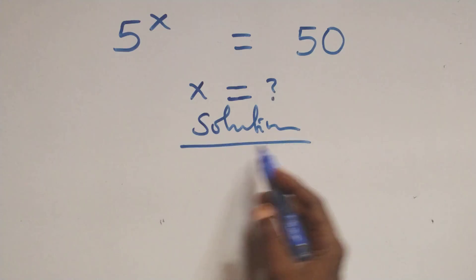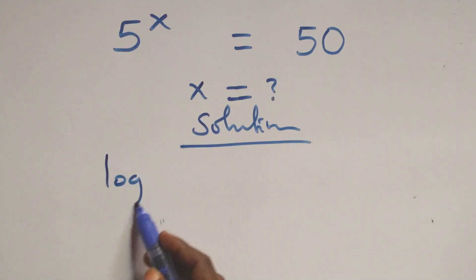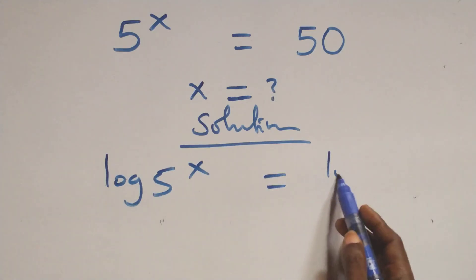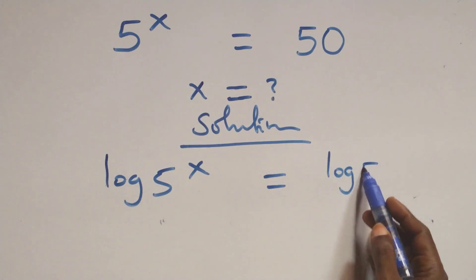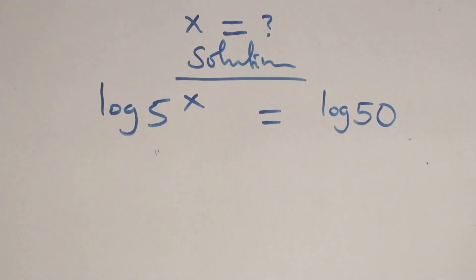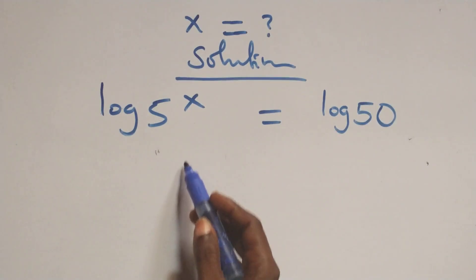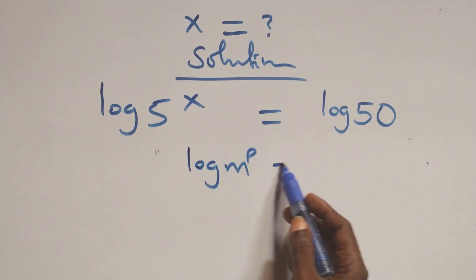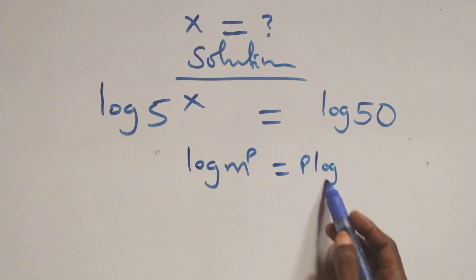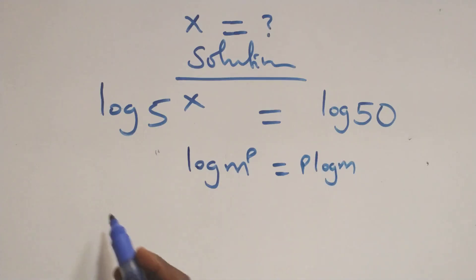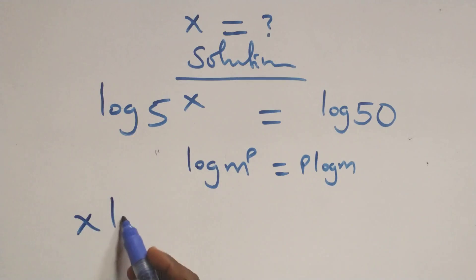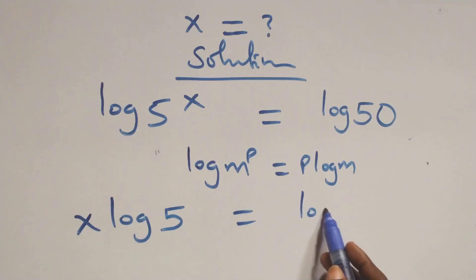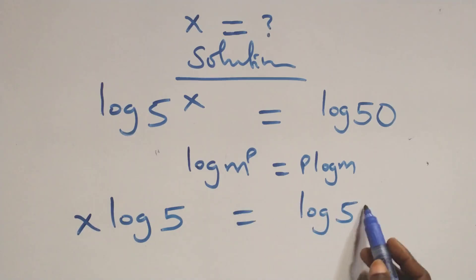What we have here — we take the log on both sides. We have log of 5 raised to power x equals to log 50 on this side. The next step, we apply the power log rule where we have log m raised to power p, which is the same thing as p log m. At this here we have x log 5 equals to log 50.